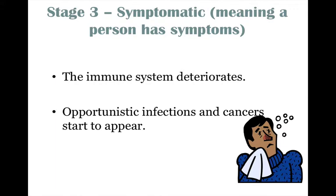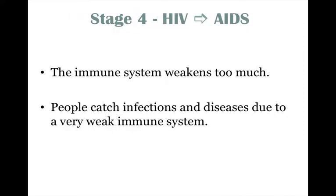Stage 3 — Symptomatic, meaning a person has symptoms. The immune system deteriorates, and opportunistic infections and cancers start to appear. Stage 4 — AIDS: the immune system weakens too much, and people catch infections and diseases due to a very weak immune system.